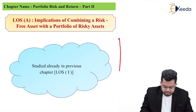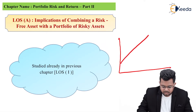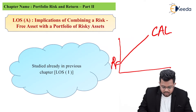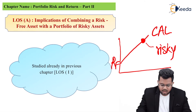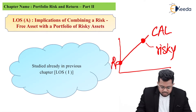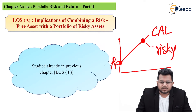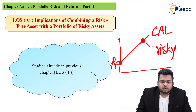If you remember, we had drawn something known as the capital allocation line. It started from the risk-free asset and ended with a portfolio of risky assets. When we start from the risk-free asset, our return was usually 4 or 5 percent, and when it went up to the risky portfolio, our return was something around 15 percent.